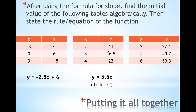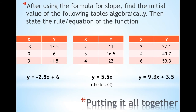For this one, you would find that the slope is 5.5 — very easy, y2 minus y1. But then when you plug in a point, you should get that B is equal to zero. So you could put 5.5x + 0, but there's no need to write it at all. And in the last table, you find the slope and get 9.3.